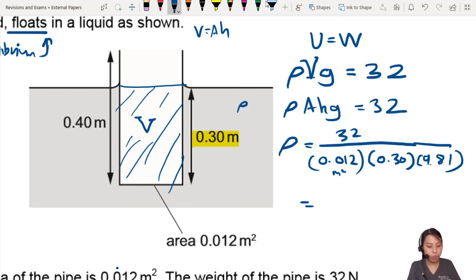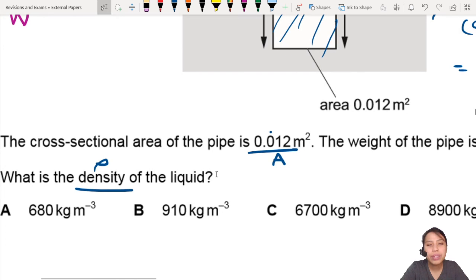Okay, calculation time. So we take 32 divided by 0.012 times 0.3 times 9.81. We get a nice number, about 906, actually not a nice number, there's decimals behind it, 906.1. And what is this? Density. So probably kilograms per meter cubed. Final answers usually round off to 2 significant figures, so you look for 910. Is there a 910? Yes, 910. So this one is the density of the fluid submerged in there.